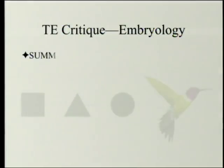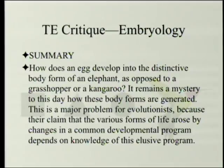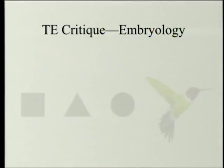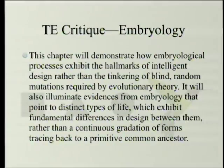There's a summary at the beginning: how does an egg develop into the distinctive body form of an elephant as opposed to a grasshopper or a kangaroo? It remains a mystery to this day how these body forms are generated. This is a major problem for evolutionists, because their claim that the various forms of life arose by changes in a common developmental program depends on knowledge of this elusive program — or at least assumptions about it. This chapter will demonstrate how embryological processes exhibit the hallmark of intelligent design rather than the tinkering of blind random mutations required by evolutionary theory.